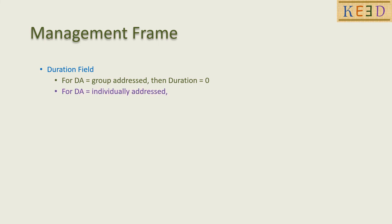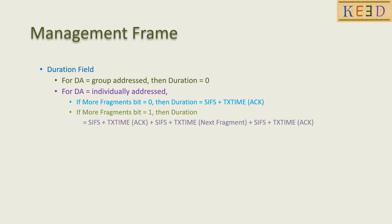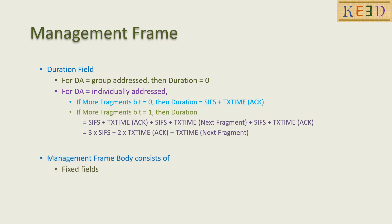For a unicast management frame, the duration depends on the more fragment bit. If more fragment bit is 0, then the duration equals SIFS plus TX time for ACK frame plus SIFS plus TX time for the next fragment plus SIFS plus TX time for ACK frame. The management frame body consists of fixed fields and information elements.